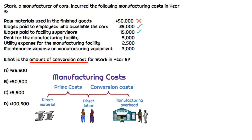How about rent for the manufacturing facility? Rent — anything related to the building — is not directly traceable, so it's not a direct material. It's an indirect cost, and that's part of manufacturing overhead, which means it will be part of conversion costs. So include that.